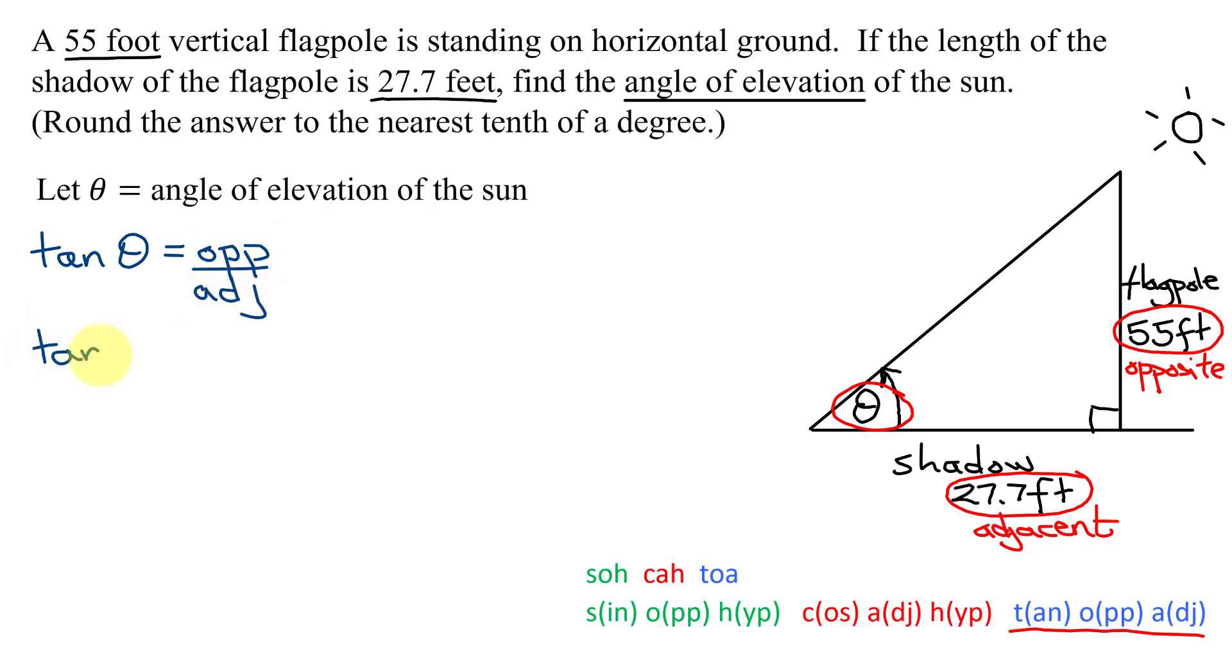So the tangent of theta is 55 feet divided by the adjacent side, which is 27.7 feet. So now to find theta, I'm going to have to use the inverse tangent function.